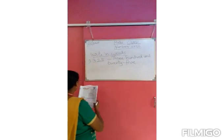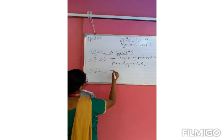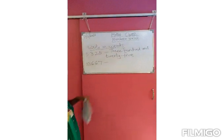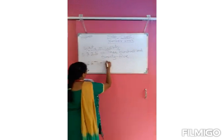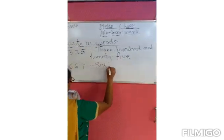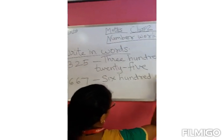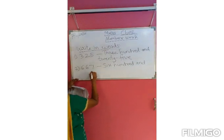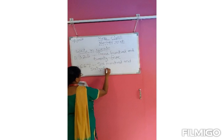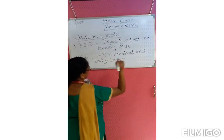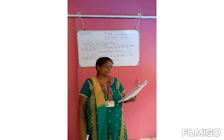We will take another number: 6, 6, 7. How will we write 667? Six hundred and sixty-seven. Okay, understood?